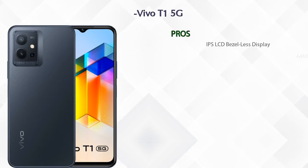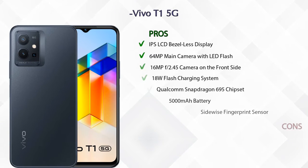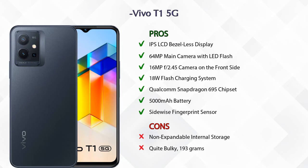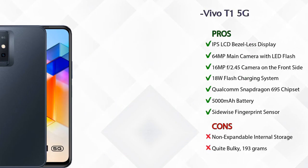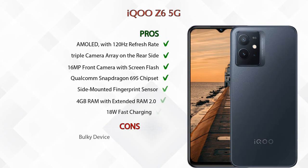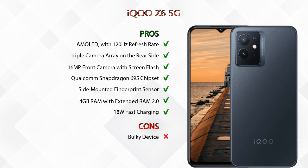Now let's talk about pros and cons. The Vivo T1 5G has seven pros and two cons. The iQOO Z6 5G has seven pros and one con.